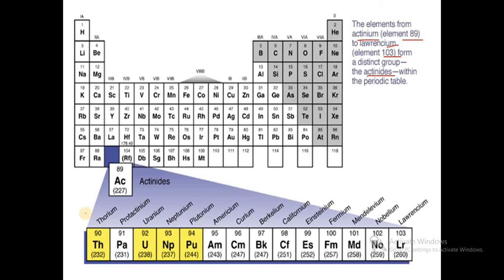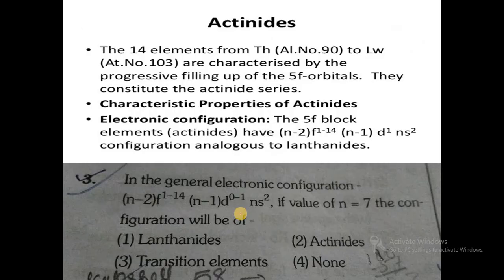The actinide series includes: actinium, thorium, protactinium, uranium, neptunium, plutonium, americium, curium, berkelium, californium, einsteinium, fermium, mendelevium, nobelium, and lawrencium.